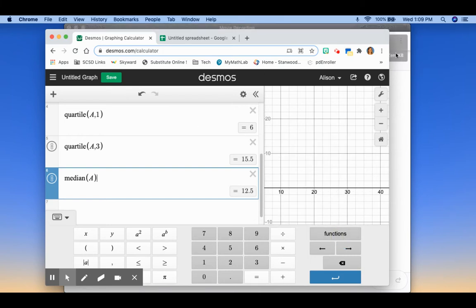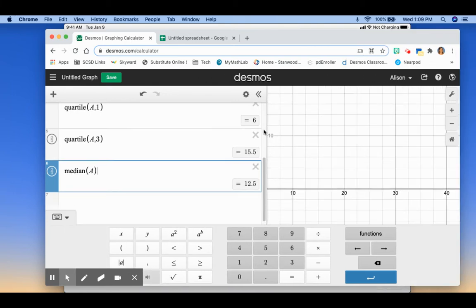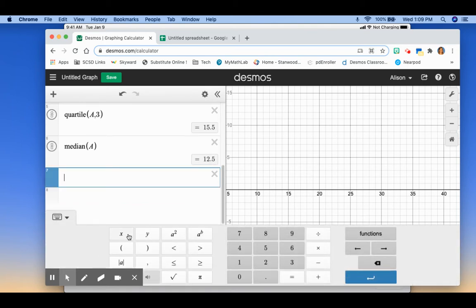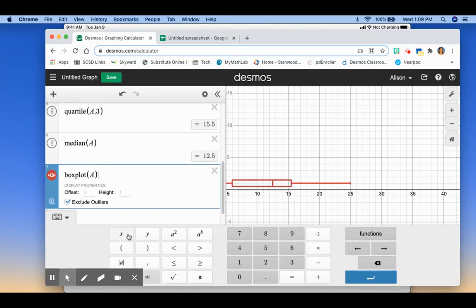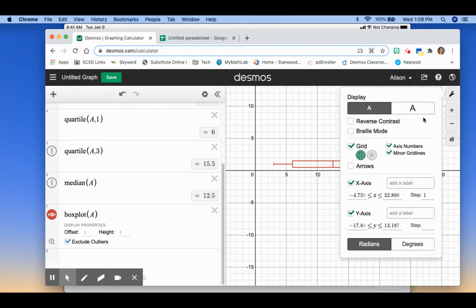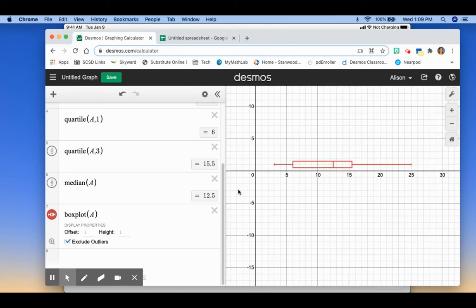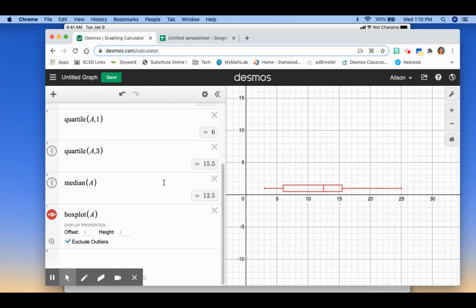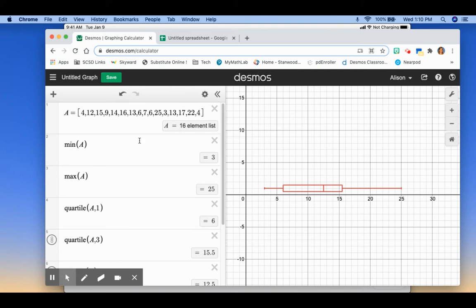So then the other thing that's super cool about Desmos is I can type box plot of A and it will actually graph the box and whisker box plot here. You can adjust your graph settings up here if you want to. You can make it go by ones so you can be clear where each value is. So you could read your five number summary from your box plot as well if it's easier just to type that and then find those values.